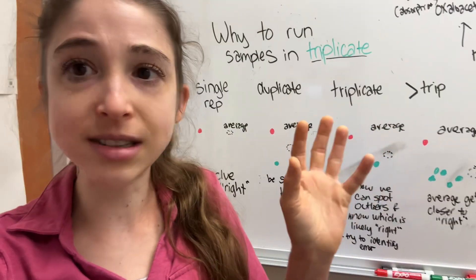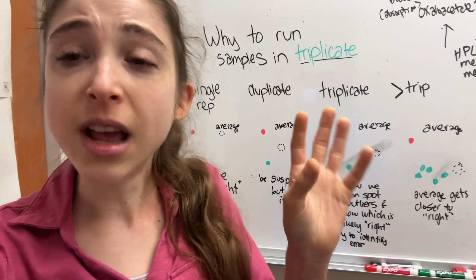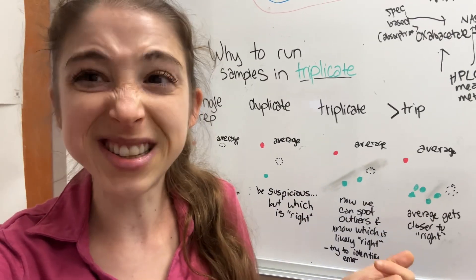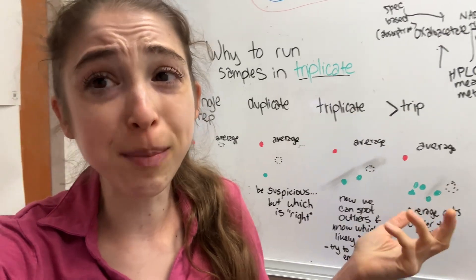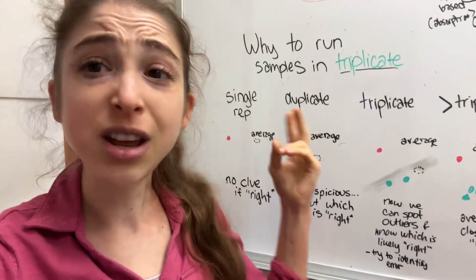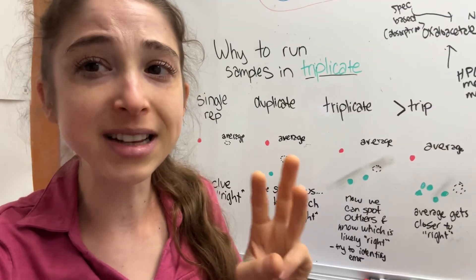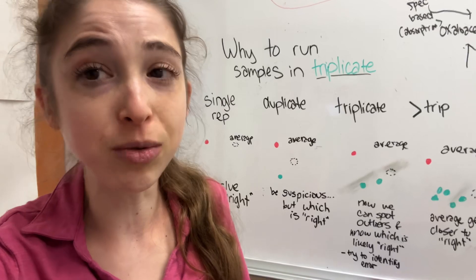When you're setting up an experiment, it can be really tempting to just do a single replicate because it's easy. But if you only do a single replicate, you have no idea if it's right. You do two, you still don't know if it's right if you get two different values. Really, doing three is going to be the minimum that you need to do.